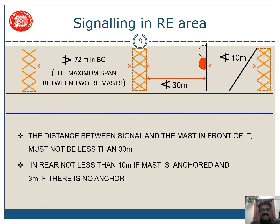Coming to OHE masts placed near the signal: the distance from the signal to the OHE mast ahead shall not be less than 30 meters. A OHE mast in the rear of the signal shall not be less than 10 meters if it is anchored, and not less than 3 meters if there is no anchor.